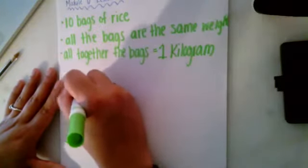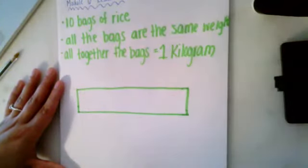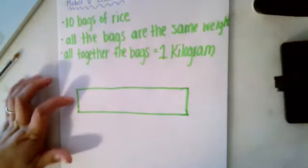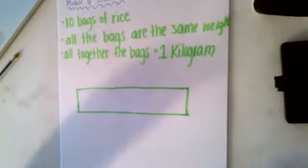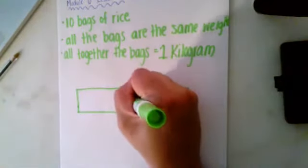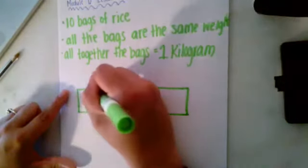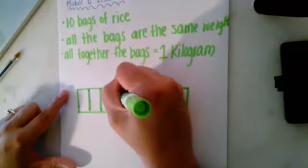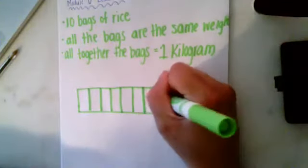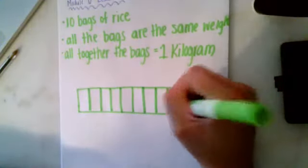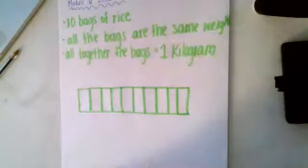I'm going to start by drawing the tape diagram, and then I'm going to section this into 10 sections. Now take a second and think, why am I sectioning it into 10 sections? If you said that I was sectioning this into 10 sections because there are 10 bags of rice, then you are right. So one, two, three, four, five, six, seven, eight, nine, ten bags of rice.